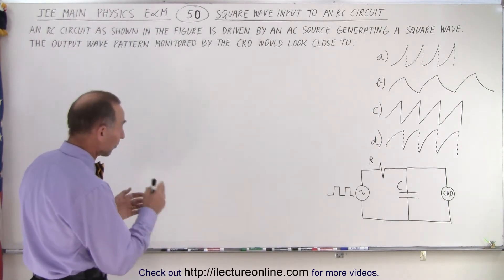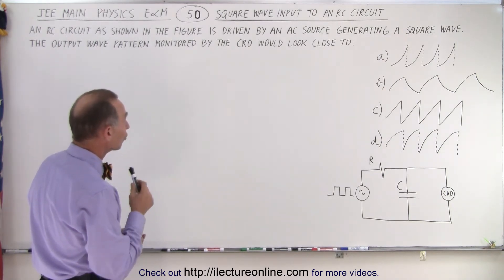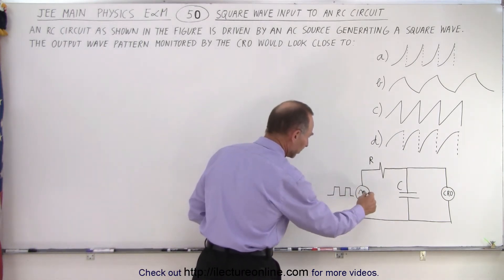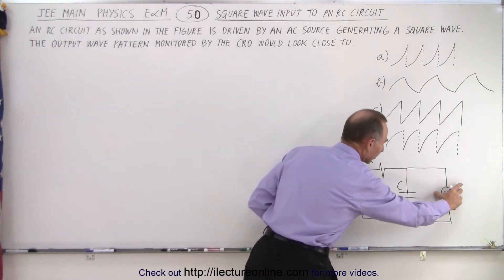An RC circuit as shown in the figure, and they did provide a figure with the test, is driven by an AC source generating a square wave. So here we have a square wave generator input into an RC circuit and it's being monitored by a CRO.